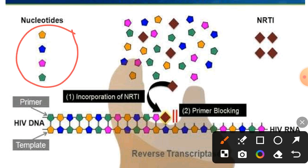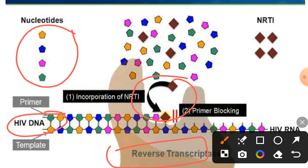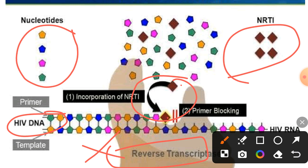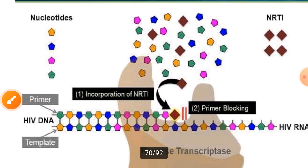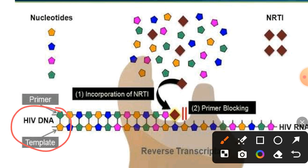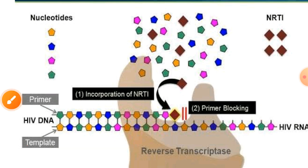Here you can see different nucleotides, HIV's viral DNA, and the enzyme reverse transcriptase. Within this enzyme, there is a specific binding site. The nucleoside reverse transcriptase inhibitor occupies this particular site — shown in maroon in the diagram. When it occupies this site, the reverse transcriptase enzyme is blocked, which means that HIV RNA being reverse-transcribed into HIV DNA is blocked. This process is automatically inhibited by blocking the reverse transcriptase enzyme.